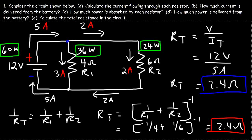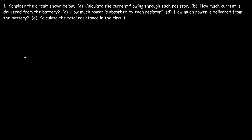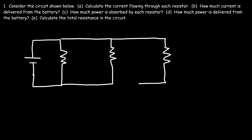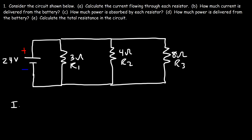Now let's work on a similar example but with three resistors. We're going to say this is a 3-ohm resistor, this is a 4-ohm resistor, and here we have an 8-ohm resistor, with a 24-volt battery. Let's call them R1, R2, and R3. To calculate I1, it's the voltage of the battery divided by R1 — 24 volts divided by 3 ohms — so 8 amps of current flows through this resistor.